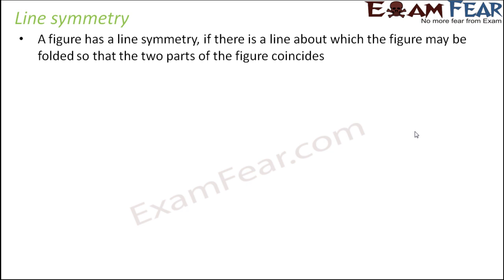A figure has line symmetry if there is a line about which the figure may be folded so that the two parts of the figure coincide. So basically, the examples we have been taking about symmetry till now were mostly line symmetry, because we always talk about a line about which we can fold a figure such that the two identical halves will cover each other completely. This type of symmetry is called line symmetry.